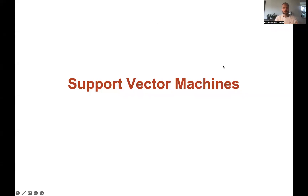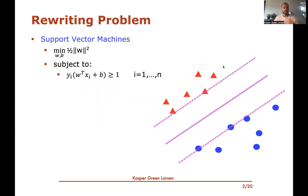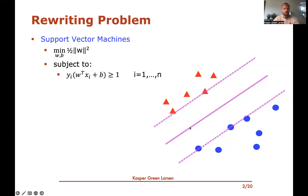Hi, and welcome back to this sequence of videos on support vector machines. In the previous video, we rewrote the support vector machine problem of finding a maximum margin separating hyperplane into an optimization problem, where we choose the minimum over W and B — where W is the normal vector of a hyperplane and B is a bias — of half the squared norm of W, subject to constraints. Solving this gives the separating hyperplane with the largest margin to the nearest data points.